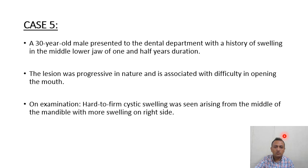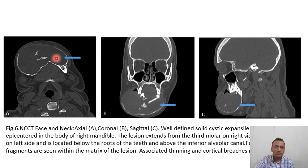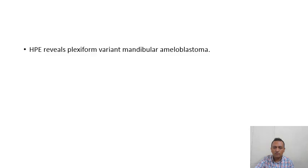Case 5: a 30-year-old man presented to the dental department with history of swelling in the middle of the lower jaw of one and a half years duration, progressive in nature and associated with difficulty in opening the mouth. On examination, a hard firm cystic swelling was seen arising from the middle of the mandible with more swelling on the right side. On NCCT face and neck — axial, coronal and sagittal — there is a well-defined solid-cystic expansile lesion in the body of the right mandible, extending from the third molar on the right side to the first molar on the left side, located below the roots of teeth and above the inferior alveolar canal. A few resorbed bone fragments are seen within the matrix with cortical thinning and cortical bridges noted at places. Histopathology reveals plexiform variant mandibular ameloblastoma.